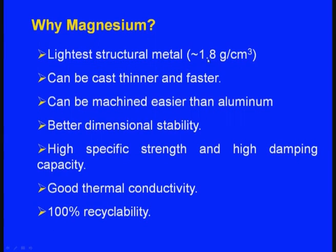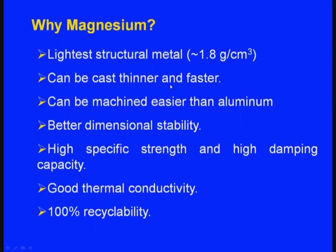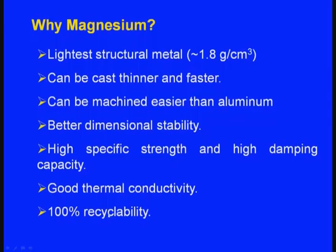So far we have completed the aluminum cast alloys. Now let us see the magnesium cast alloys. The first question is: why magnesium? It is the lightest structural metal — its density is 1.8 grams per cubic centimeter, whereas for aluminum the density is 2.7 grams per cubic centimeter. Magnesium can be cast thinner and faster, machined easier than aluminum, with better dimensional stability, high specific strength, high damping capacity, good thermal conductivity and 100 percent recyclability. That is why slowly magnesium alloys are replacing aluminum alloys.